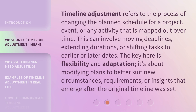Timeline Adjustment refers to the process of changing the planned schedule for a project, event, or any activity that is mapped out over time. This can involve moving deadlines, extending durations, or shifting tasks to earlier or later dates. The key here is flexibility and adaptation. It's about modifying plans to better suit new circumstances, requirements, or insights that emerge after the original timeline was set.